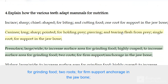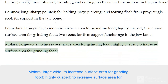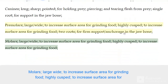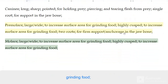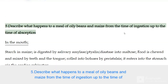Premolars have two roots for firm support and anchorage in the jaw bone. Molars are large and wide, and highly cusped to increase surface area for grinding food.